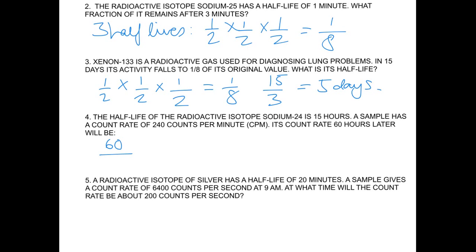I'm going to do 60 hours divided by 15, and I see that 4 half-lives have occurred. So after 1 half-life, 120 counts would remain, but there were 4 of them, so I'm going to times it by 1 half, 4 times.